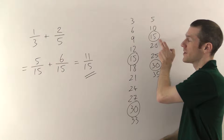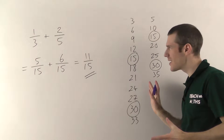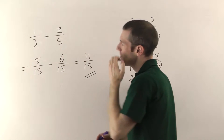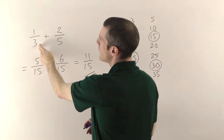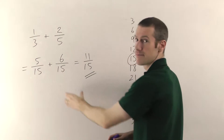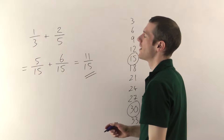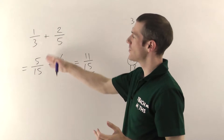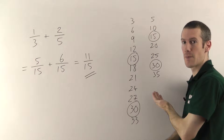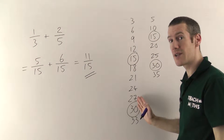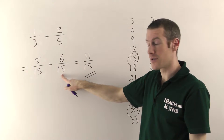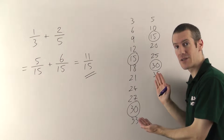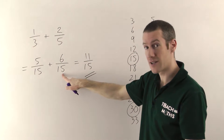You're looking for the smallest number that appears in both times tables. Remember, you can't rewrite thirds as fifths or fifths as thirds. But if you rewrite both the thirds and the fifths as some other fraction — fifteenths — then you can do the addition. You need a number that 3 will divide into and 5 will divide into. If 3 is going to divide into the number on the bottom, it must be in the 3 times table, and 5 must divide into it too.